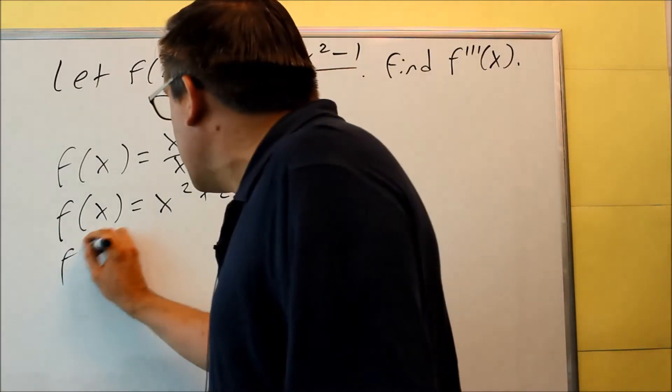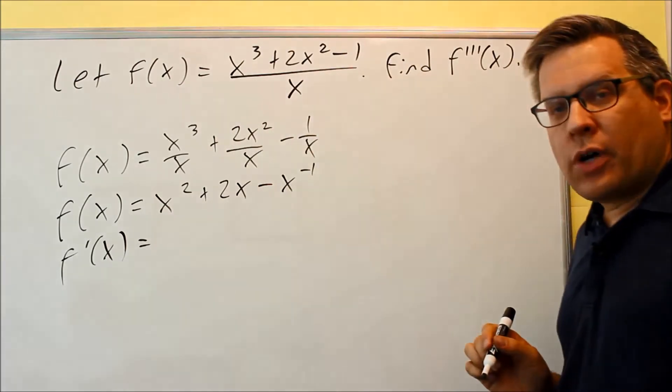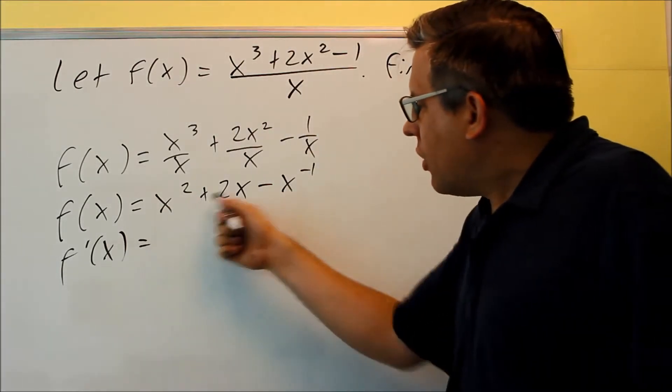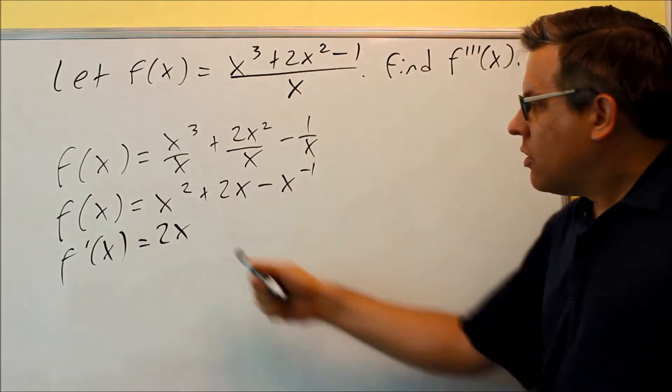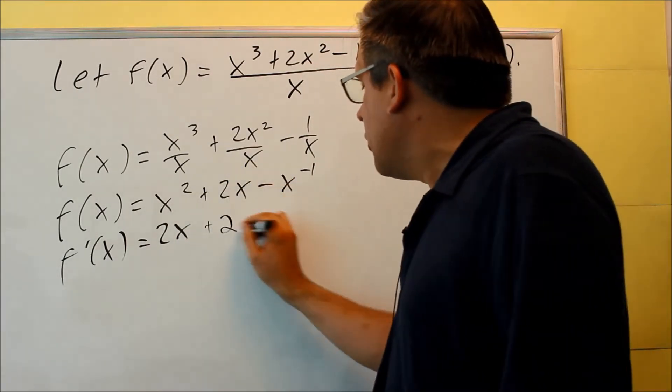Now we're ready to do the derivative by applying the power rule. We're going to apply the derivative to this. So we're going to use power rule 2 comes down, x to the first power. This one, you're just going to be left with 2.